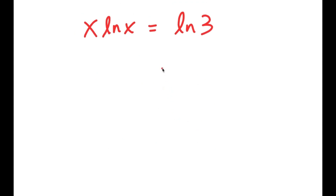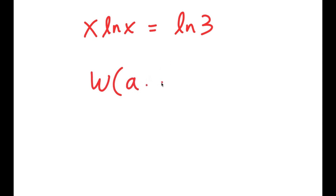Now I'm going to use an important formula called the Lambert W formula. It states that if I take W of something in the form a times e to the power of a, then this is equal to a. So this is the Lambert W formula.